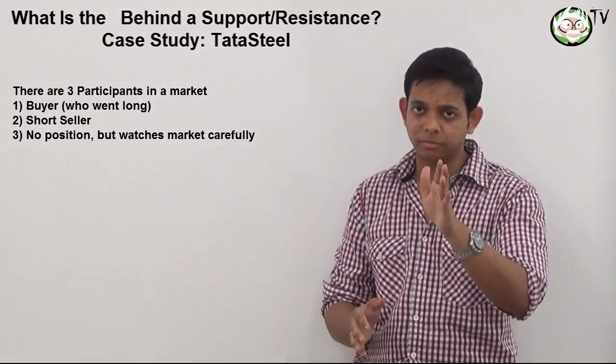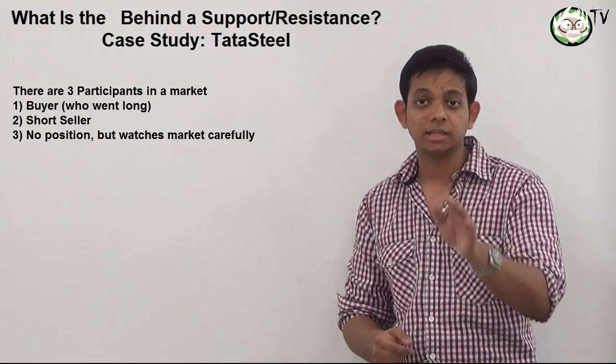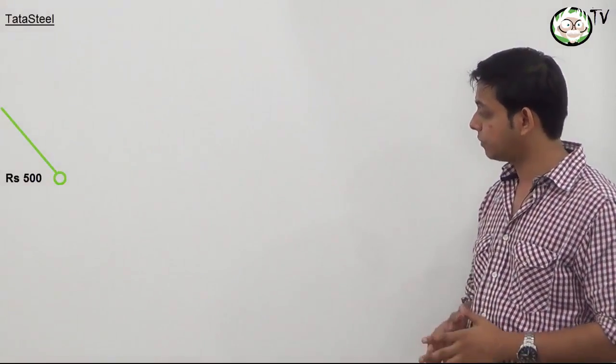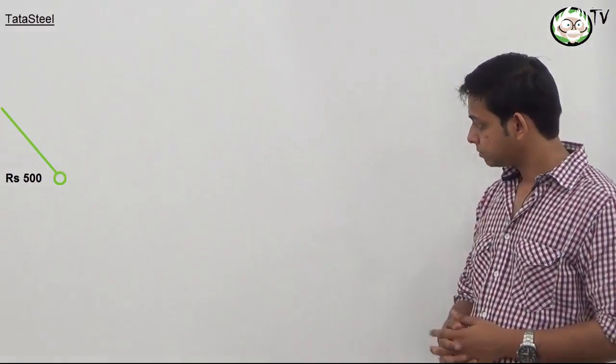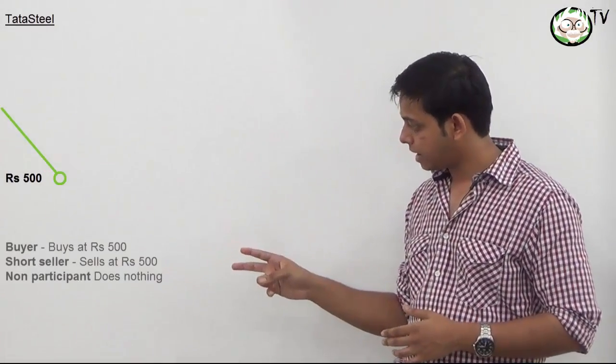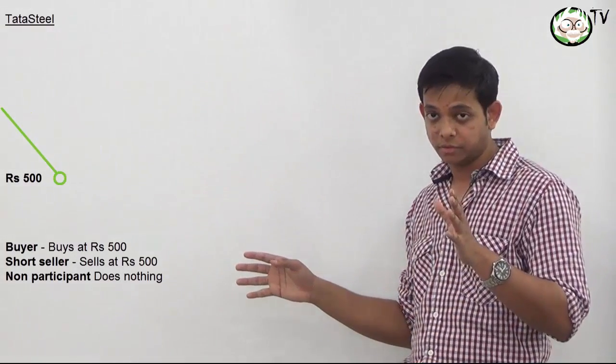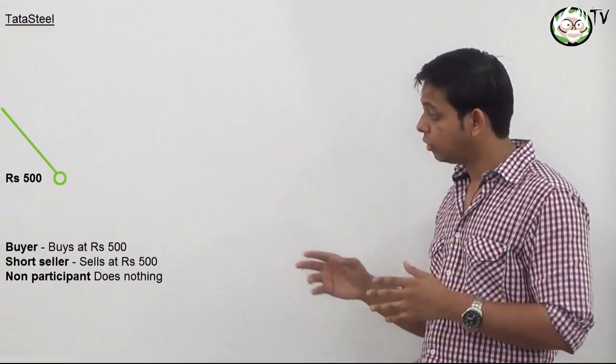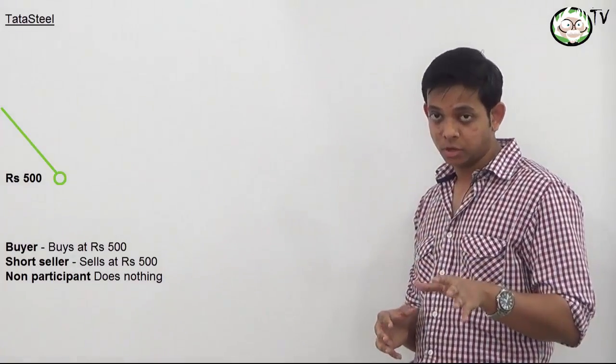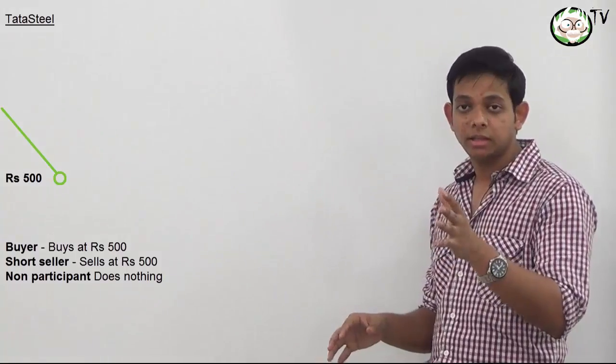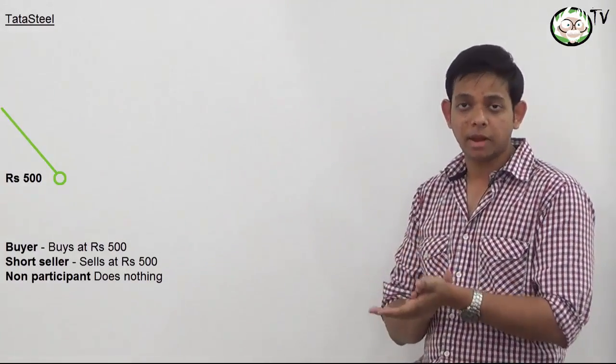So let's look at what these three people do in a situation where Tata Steel rises. So Tata Steel is trading at Rs. 500. So at this point, you have a buyer who bought shares at Rs. 500. You also have a short seller who has sold short at Rs. 500. And you have the non-participant who is sitting and comparing notes.